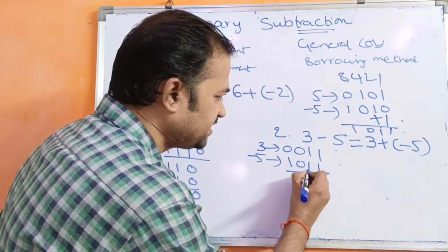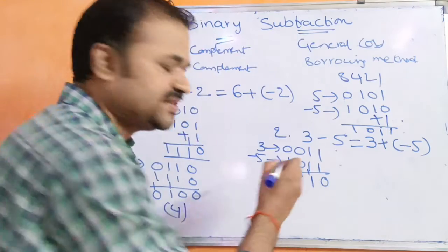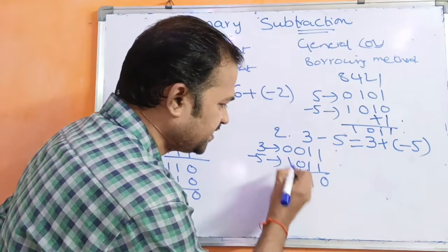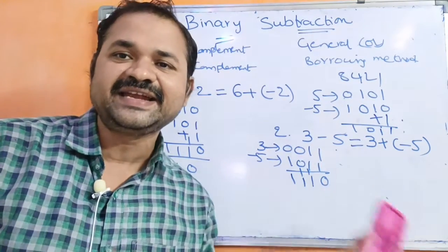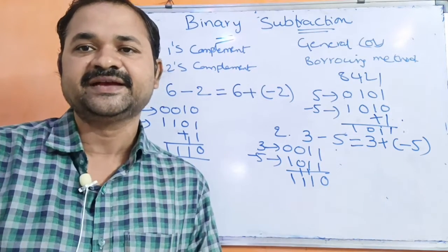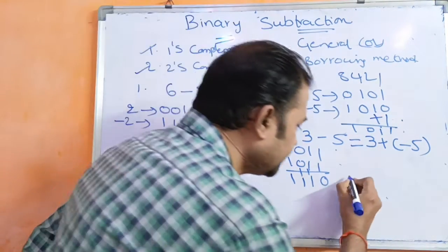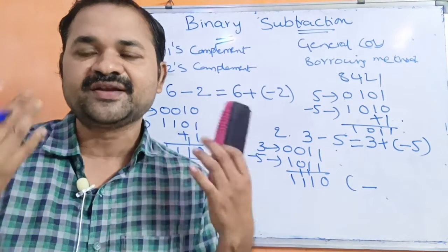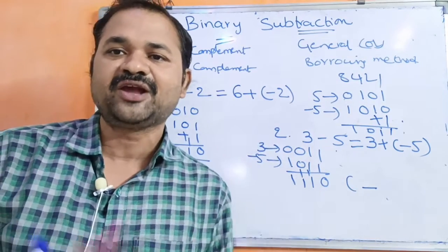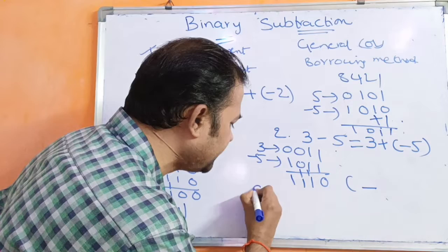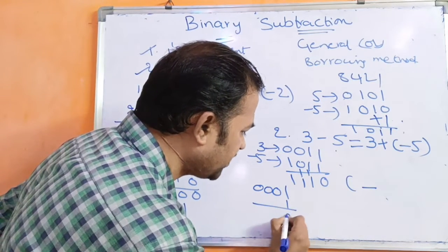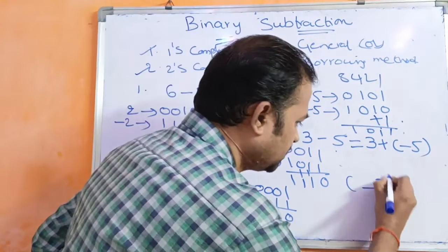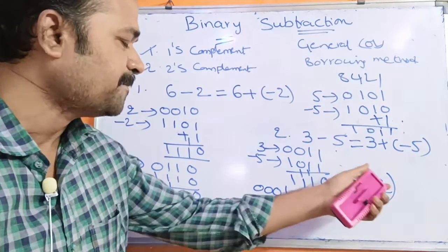Now add 0, 0, 1, 1 and 1, 0, 1, 1. 1 plus 1 is 0 with carry 1. Triple 1 gives sum 1, carry 1. 0 plus 0 plus 1 is 1. 0 plus 1 is 1. Here we did not get a final carry. If we don't get any carry, it specifies a negative number. The result is in two's complement form, so calculate the two's complement: 1, 1, 1, 0 → one's complement is 0, 0, 0, 1 → add 1 → 0, 0, 1, 0, which equals 2. So the result is minus 2. 3 minus 5 equals minus 2.